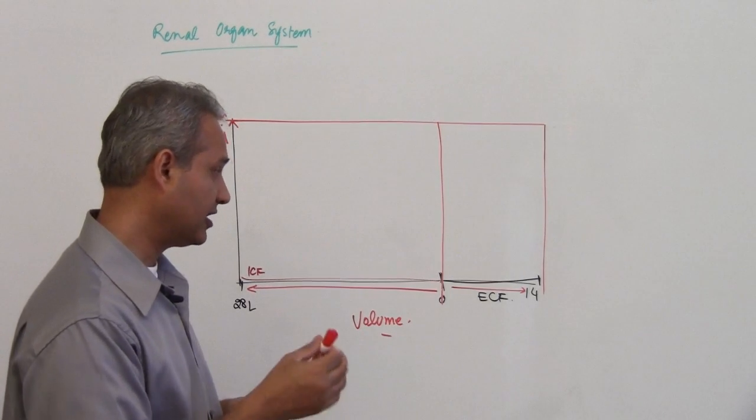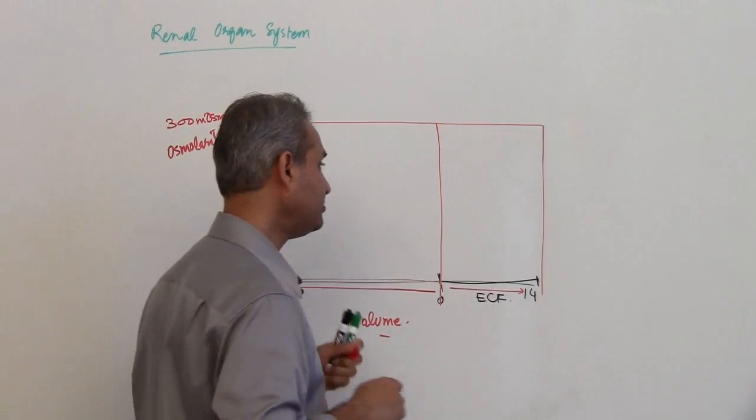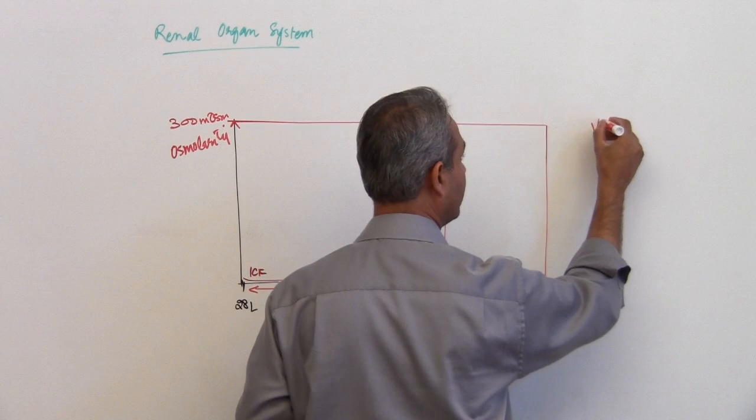So let us look at some of the physiological situations where we alter the ECF and then we see what happens to the ICF. So first situation, what I want to do is I want to say that the person is vomiting.